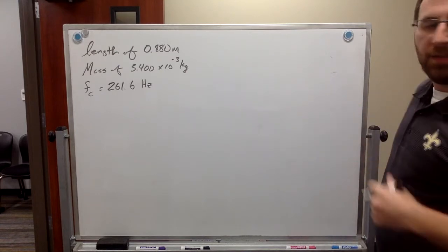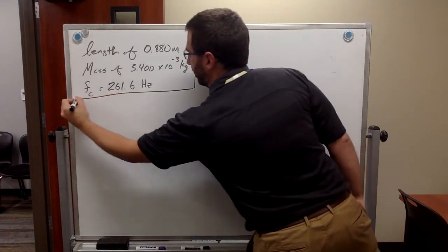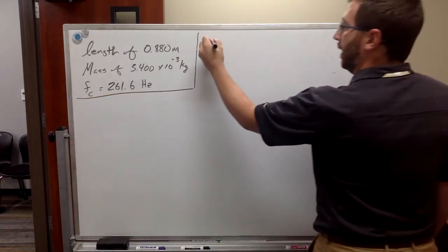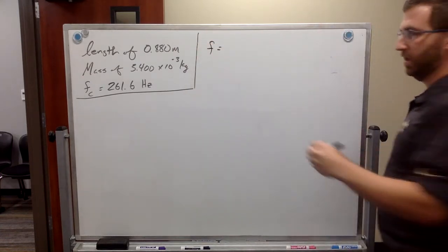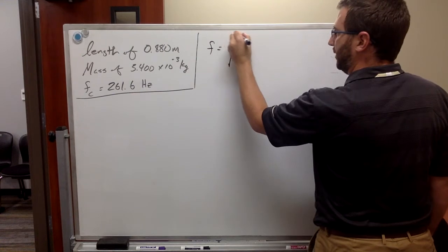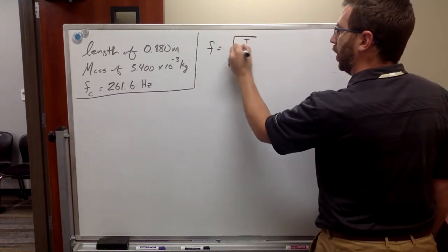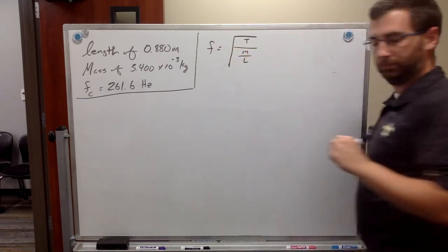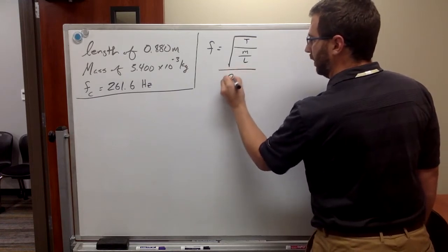The variation of the natural frequency formula, it's going to look messy, I know, but it's F equals the square root of T over M over L, over 2L.